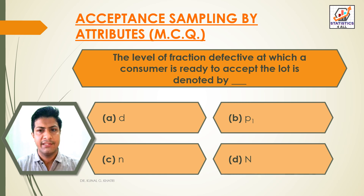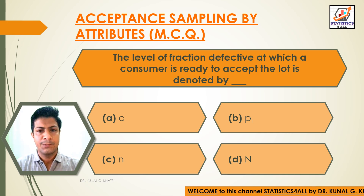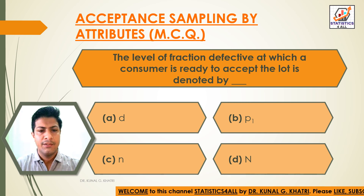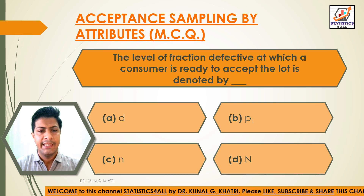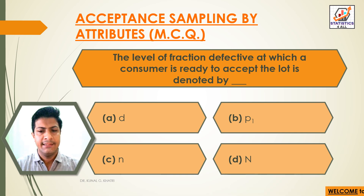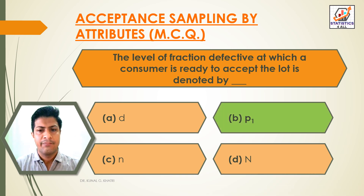Question 17: The level of fraction defective at which a consumer is ready to accept the lot is denoted by — Option A: P0. Option B: P1. Option C: small n. Option D: capital N. The answer is Option B — P1. The level of fraction defective at which a consumer is ready to accept the lot is denoted by P1.